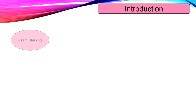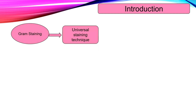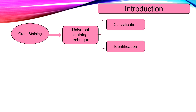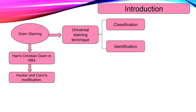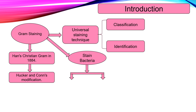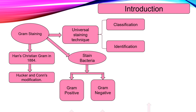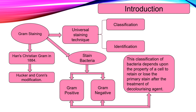Let's start with a short introduction. Gram staining is a universal staining technique used for classification and identification of microorganisms, especially bacteria. This Gram staining technique was discovered by Hans Christian Gram in 1884. Later on many scientists tried to modify this technique, but Hacker and Kahn's modification is the best one. Gram staining is used to stain bacterial cells, which are of two types: Gram positive and Gram negative. This classification depends upon the property of a cell to retain or lose the primary stain after treatment with the decolorizing agent.